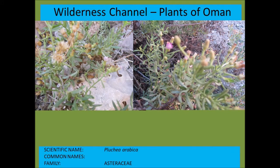Pluchea arabica is a common little plant with blue flowers. Interestingly, the seeds are said to be dispersed by rodents, and the flowers said to be pollinated by rodents. In the area there are golden spiny mice and other mice likely to be associated with this plant.